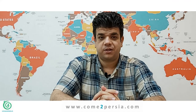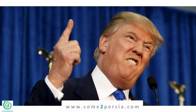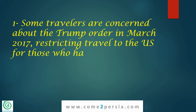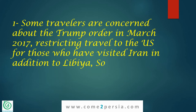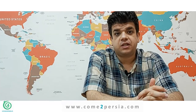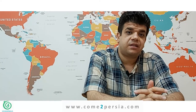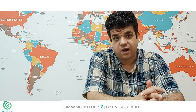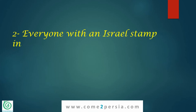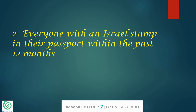At the end of this video, I would like to add two more points. First, some travelers are concerned about the Trump order from March 2017 restricting travel to the US for those who have visited Iran, in addition to Libya, Somalia, Sudan, Syria, and Yemen. The good news is that to alleviate these concerns, the passports of travelers entering Iran will not be stamped — the stamp will be on a separate document, so no one will ever find out that they've been to Iran. Second, everyone with an Israel stamp in their passport within the past 12 months is at the highest risk of getting rejected.